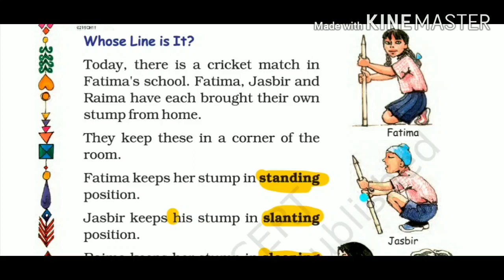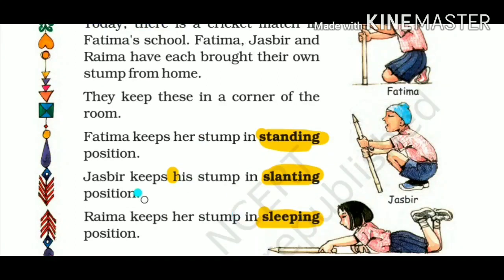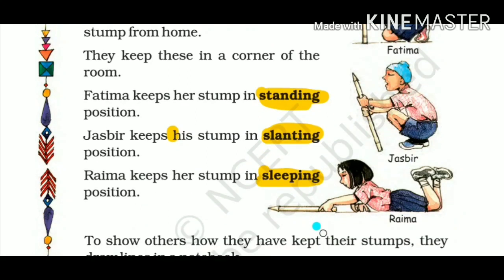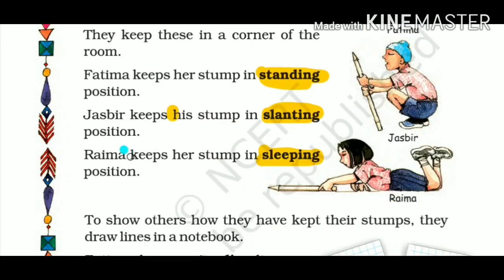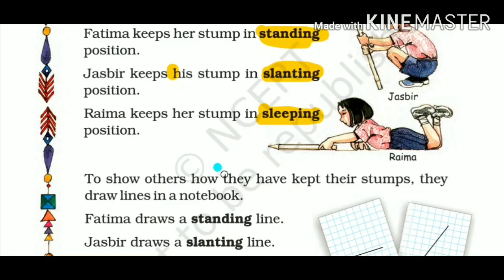Jasbir keeps her stump in a slanting position — you can see that slanting position. After that, Raima keeps her stump in a sleeping position. Raima has placed her stump lying down — that is the sleeping position. To show others how they have kept their stumps, they draw lines in a notebook.